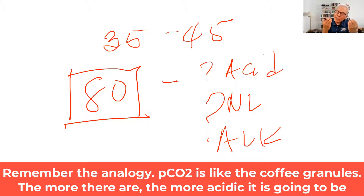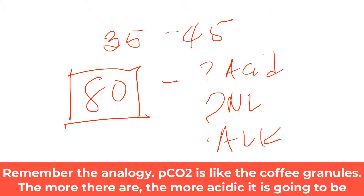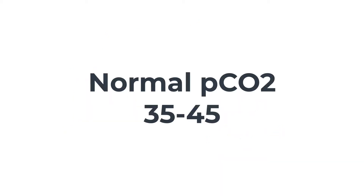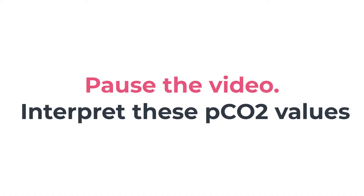So basically, if you remember CO2 as an acid, you will now remember to evaluate the respiratory component of acid-base by looking at the numbers — 35 to 45 being the normal range.